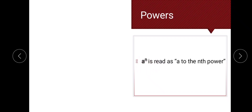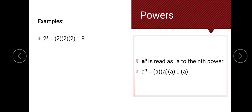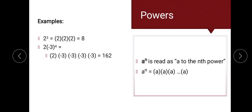Let's now proceed with powers. This is read as a to the nth power, meaning a is multiplied by itself n times. For example, 2 to the third power means 2 times 2 times 2, which equals 8. Next, 2 multiplied by negative 3 to the fourth power gives 2 multiplied by negative 3 multiplied by itself four times, which equals 162.